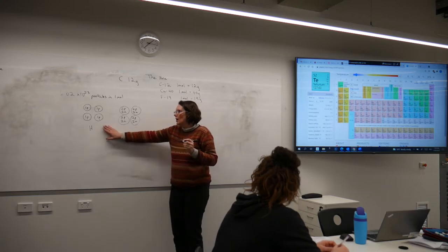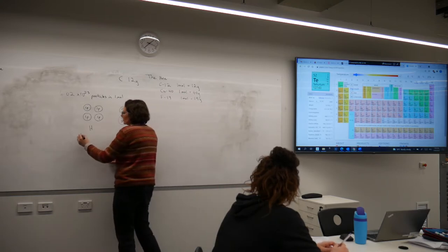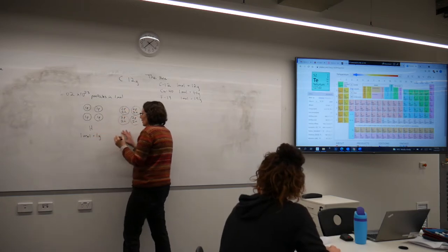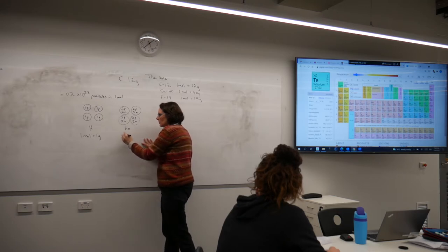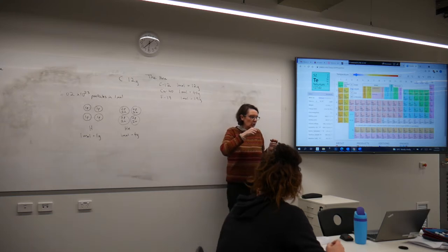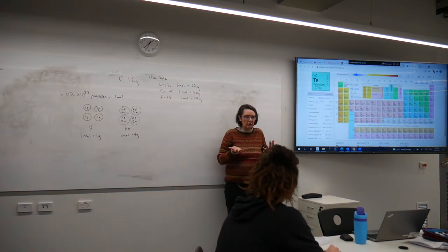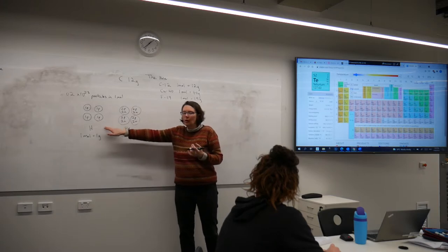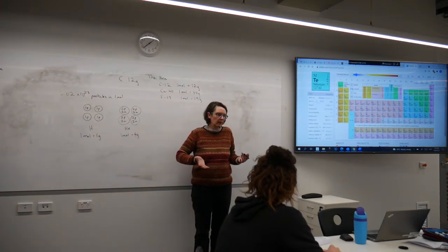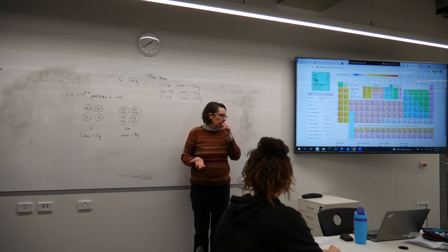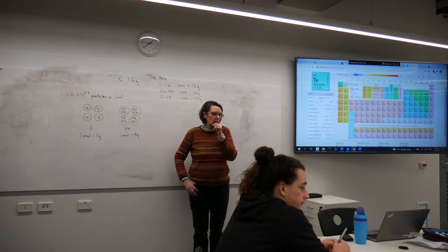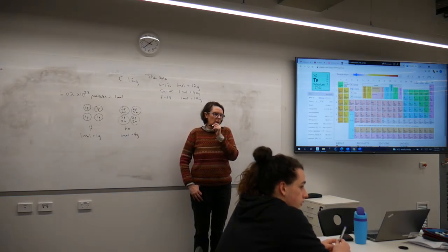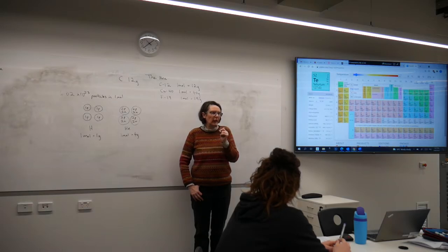So if I have one mole of hydrogen, it's going to be one gram. If I've got one mole of helium, then it's going to be four grams because each atom has got four subatomic particles, whereas each atom of hydrogen has only got one subatomic particle. So the number of grams is equal to the number of subatomic particles within that particular element.